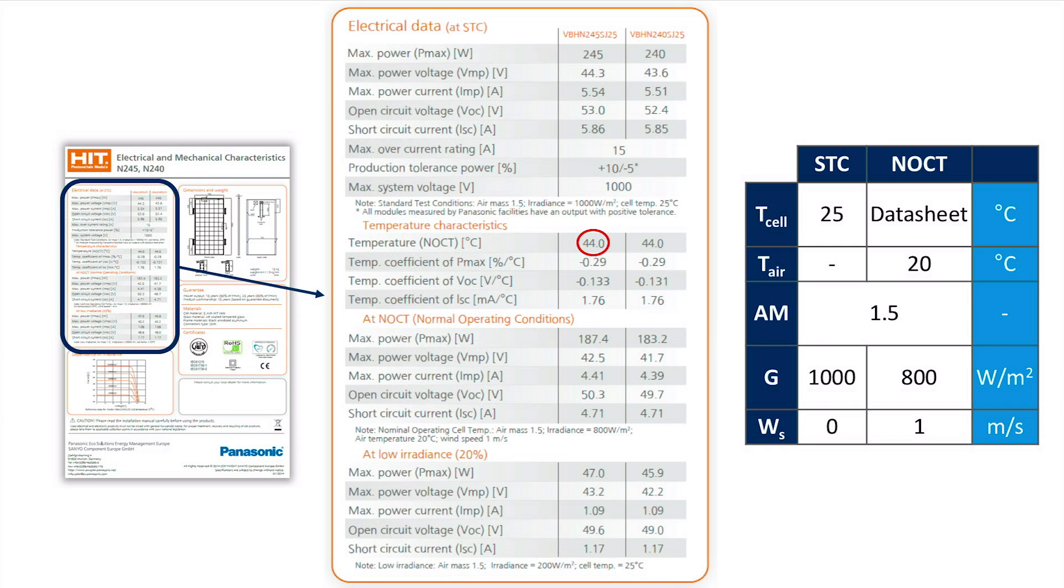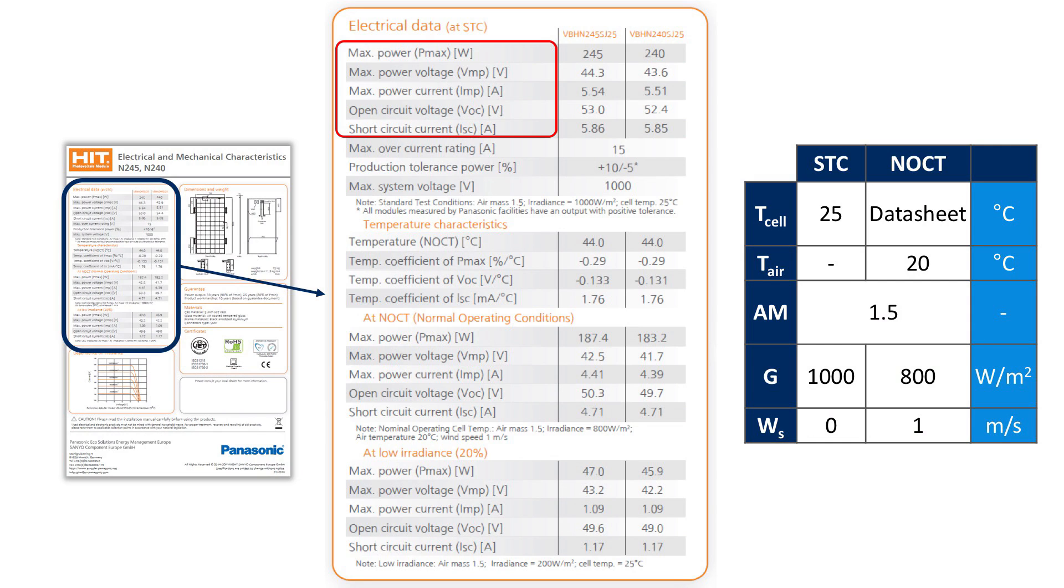Having defined both STC and NOCT, we can now focus on the electrical data which are the power, the voltage and current at the maximum power point, the open-circuit voltage and the short-circuit current. In STC case, also the maximum current and system voltage are reported for safety as well as the production tolerance power. This last parameter specifies the range within a solar cell will either overperform or underperform its rated power P at STC conditions.